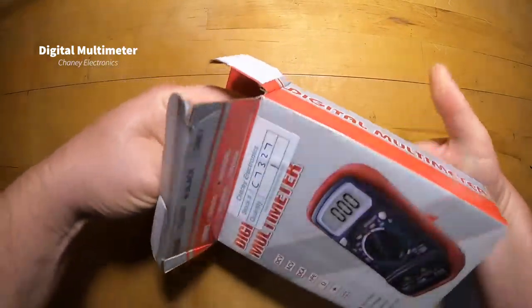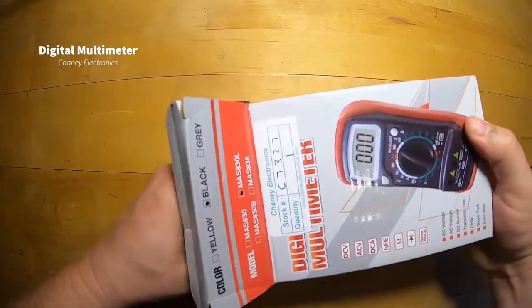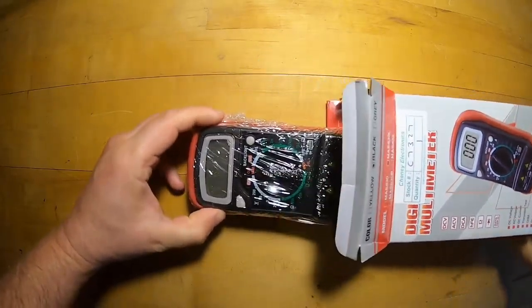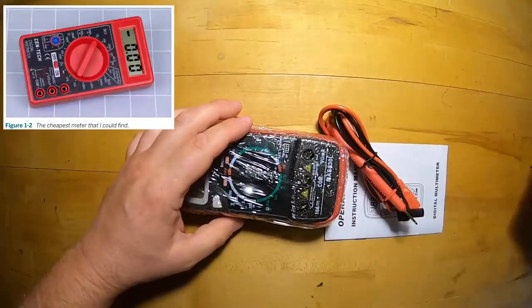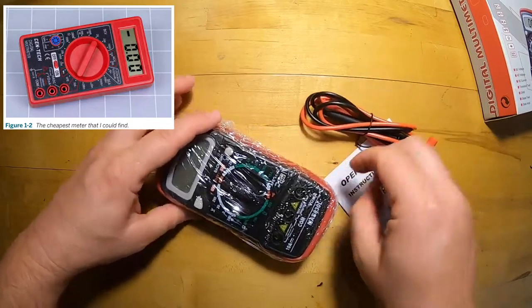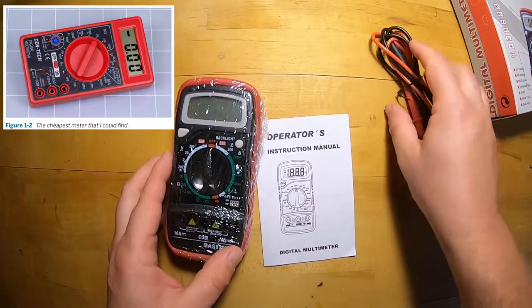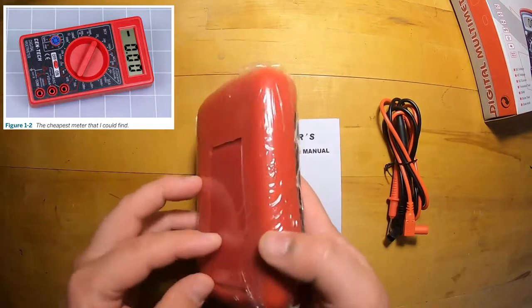The most important tool you're going to use in this class is a digital multimeter. Here is the default multimeter available from Cheney Electronics - basically the cheapest meter we could find that will still get you through the class.